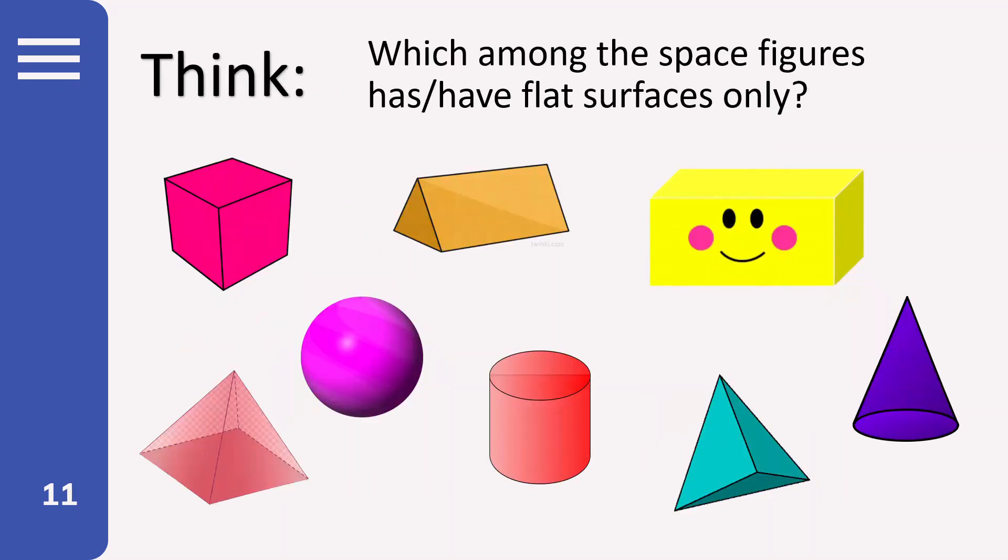Okay, alright. Next, let's think. Which among the space figures has or have flat surfaces only? Flat surfaces only. So let's check. Let's circle these space figures. Yes, the cube, the triangular prism, the square pyramid. Correct?